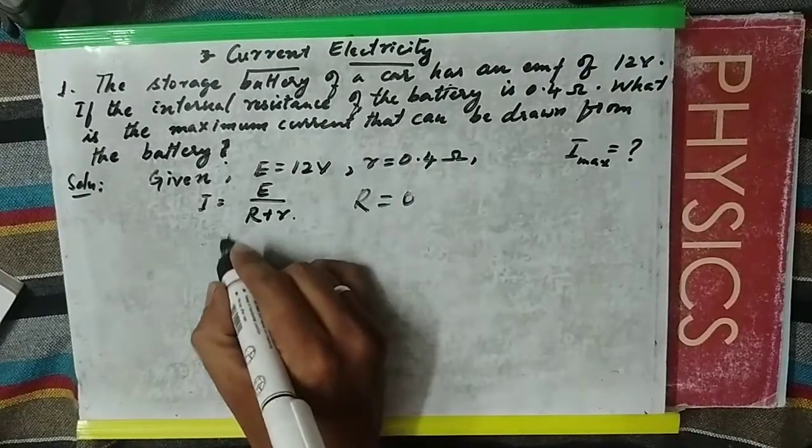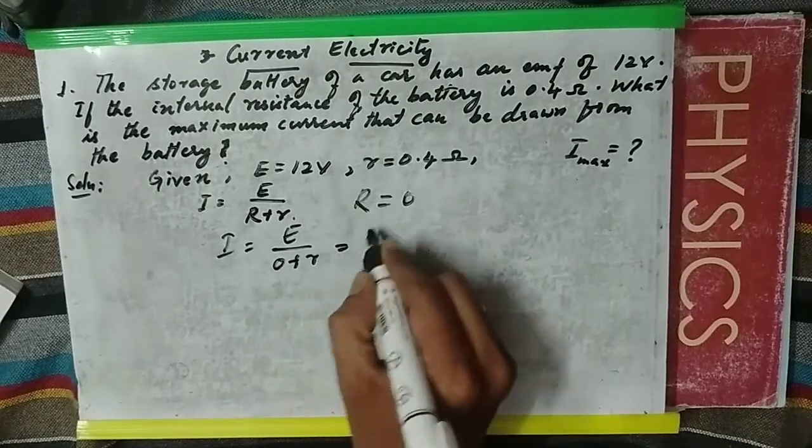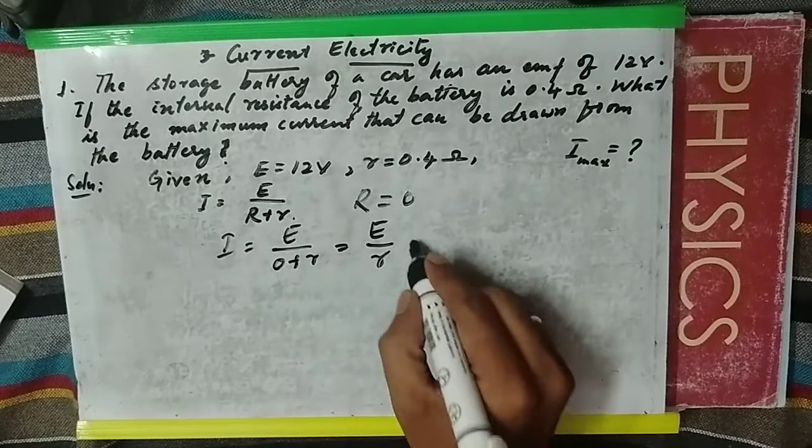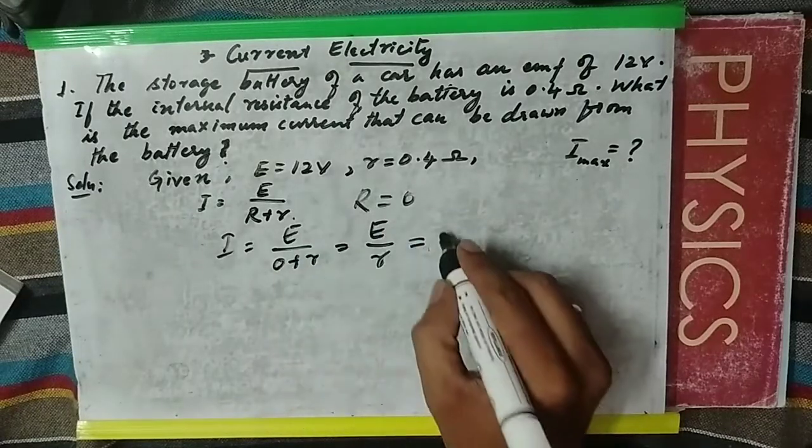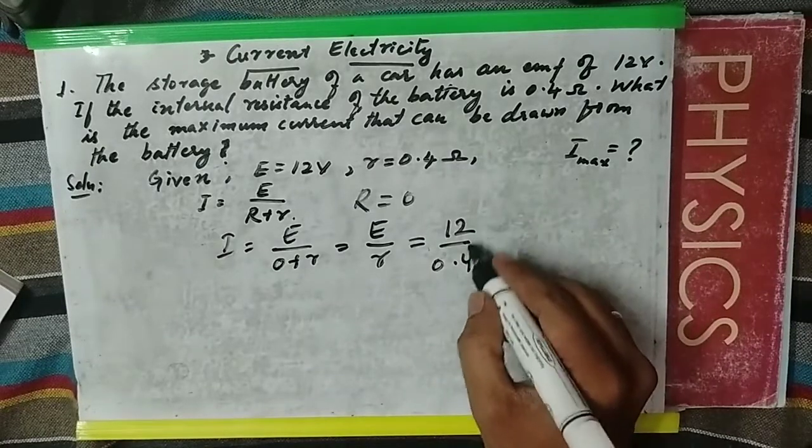Then this expression becomes I = E/(0+r) = E/r, since 0 plus r is r. Now substituting the values: E is 12 and r is 0.4, so 12 divided by 0.4...